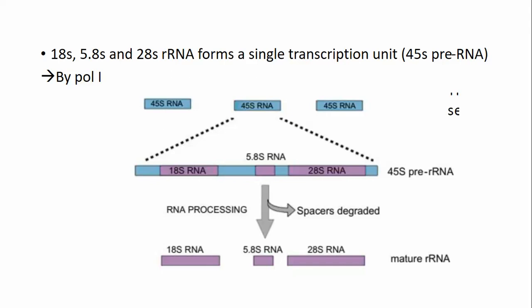The 18S, 5.8S, and 28S rRNAs are all yielded from a single transcription unit called 45S pre-rRNA. This is transcribed by RNA Pol I. The structure of the pre-rRNA gene contains 18S rRNA, then 5.8S rRNA, then 28S rRNA in that order, with special intervening spacer regions between them that are later removed to produce mature rRNA.